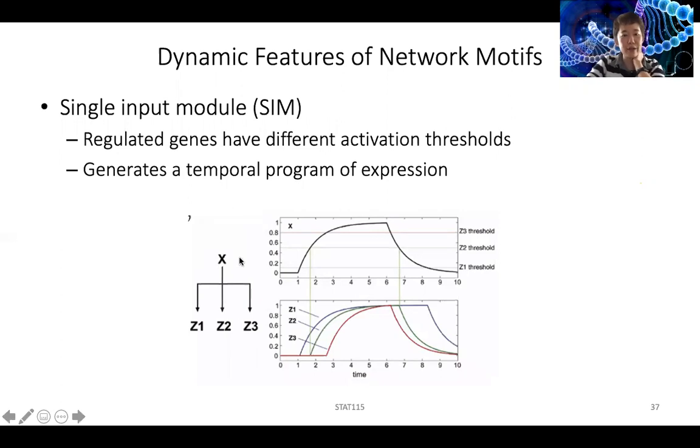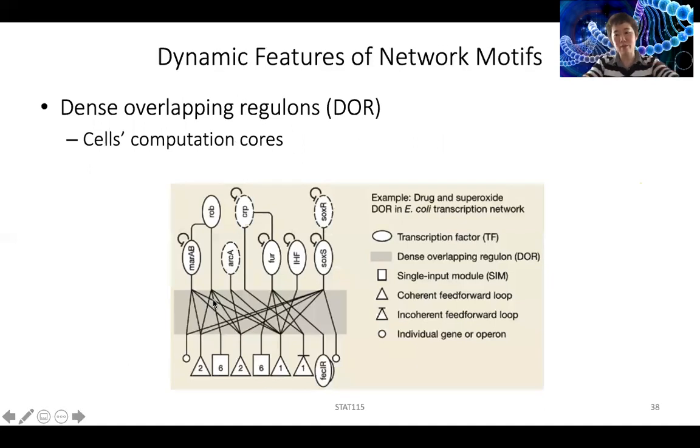You can also see a situation when one gene is regulating multiple other genes, but depending on the activation threshold, you can control the time they get activated and also the time they stop. So that's another situation. Using different activation thresholds, you can also control the output. And then when you combine these two together, using multiple inputs, using these feed forward loops, and also using the activation threshold, you can have much more complicated gene regulation behavior.